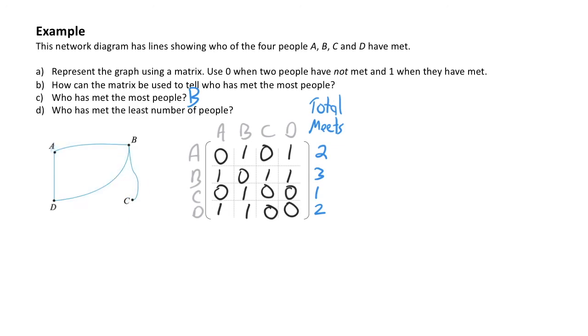We can also use the same information to see who has met the least number of people. Looking at our total meets, we can see that person C has only met one person. And again, we can check that on the network diagram and we can see that person C has only met person B. So that is only one connection.